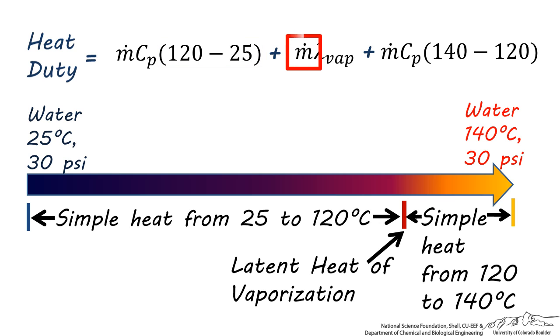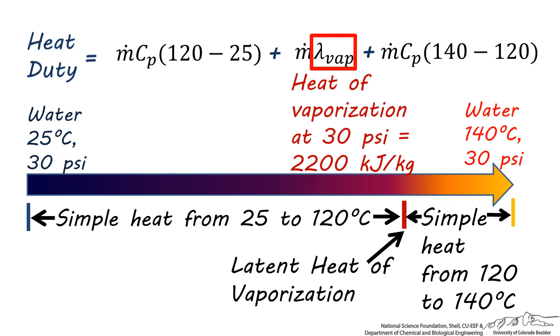The latent heat term has an M dot, which again is the flow rate of the process stream, 1 gallon per minute, which is multiplied times lambda, which is the latent heat of vaporization of water at 30 psi. If you look this up on the steam table, this values about 2200 kilojoules per kilogram, which is a lot of energy.